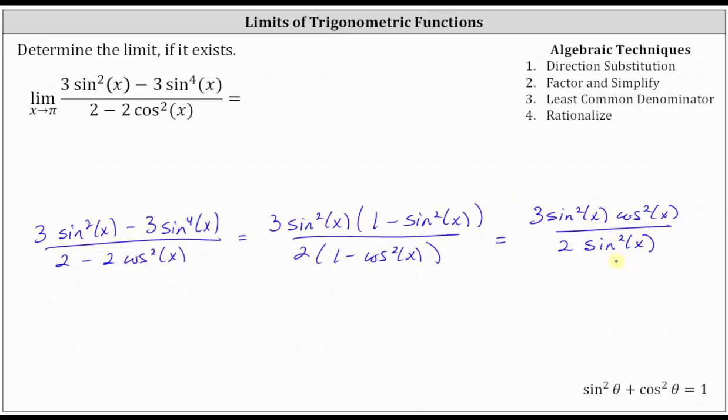Notice that after performing this substitution, we have a common factor of sine squared x between the numerator and denominator that will simplify to one. Sine squared x divided by sine squared x simplifies to one, leaving us with three cosine squared x divided by two as the simplified function. By simplifying out the common factor of sine squared x, we're eliminating the removable discontinuity of the original function, which does not affect the limit.